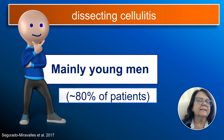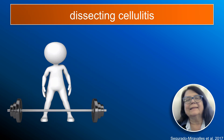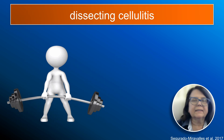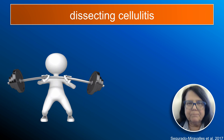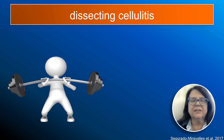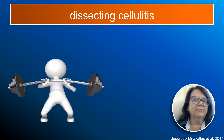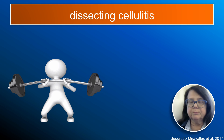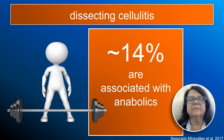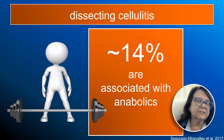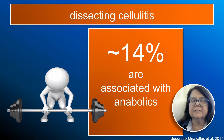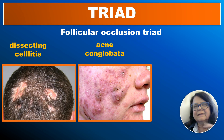Dissecting cellulitis affects mainly young men, and among young men these are usually sportsmen and bodybuilders. It may be associated with physical activity, but it has also been shown that in approximately 14 percent of cases, dissecting cellulitis is associated with the use of anabolics.